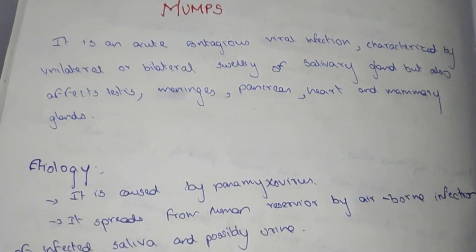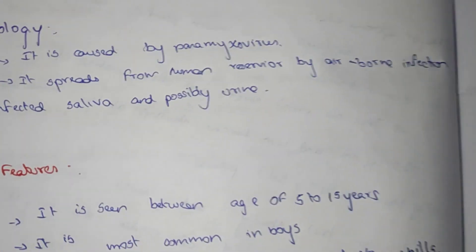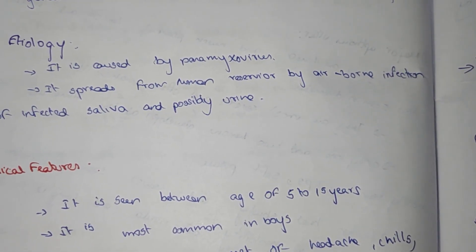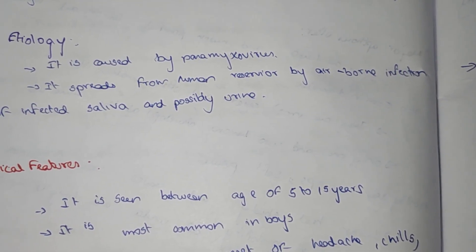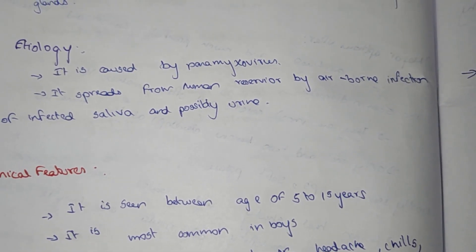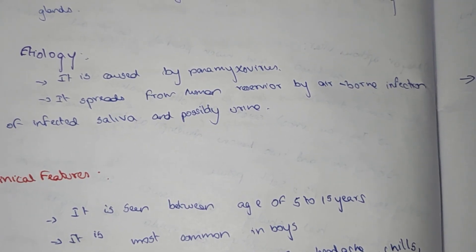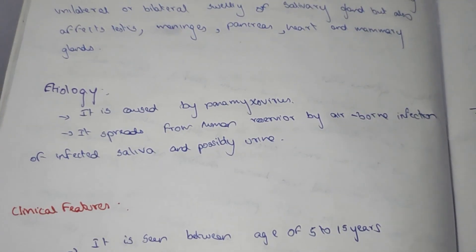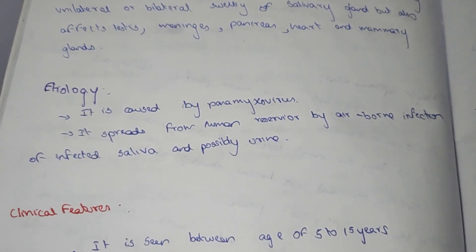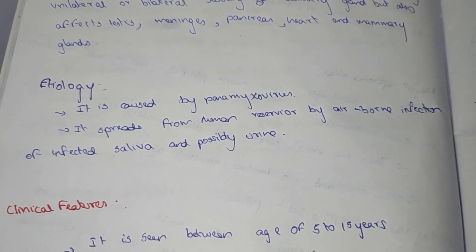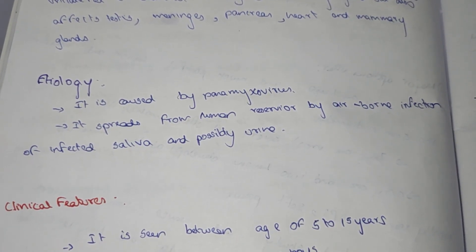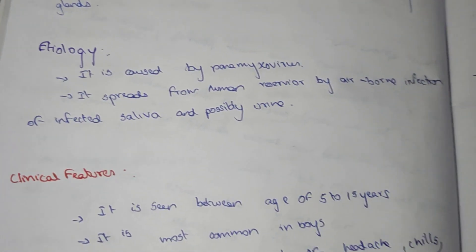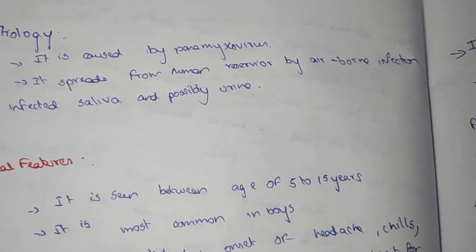This is a mumps introduction. Etiology: it is caused by paramyxovirus. It spreads from a human reservoir by airborne infection of infected saliva, or possibly urine.